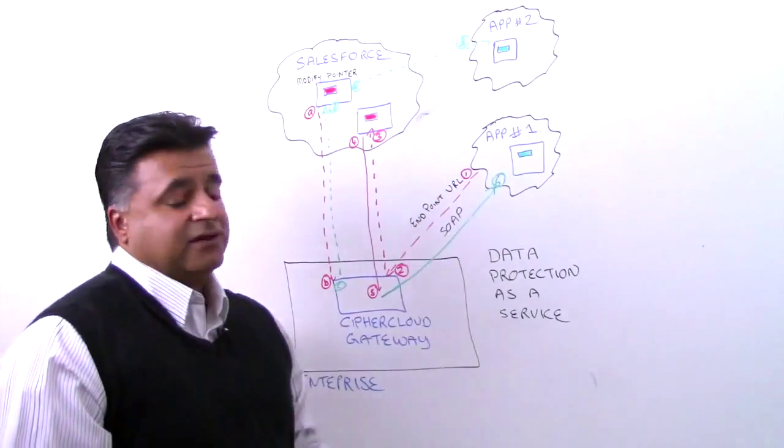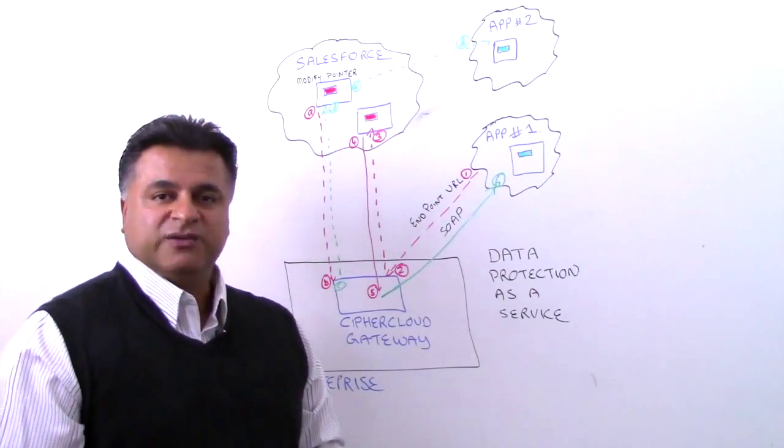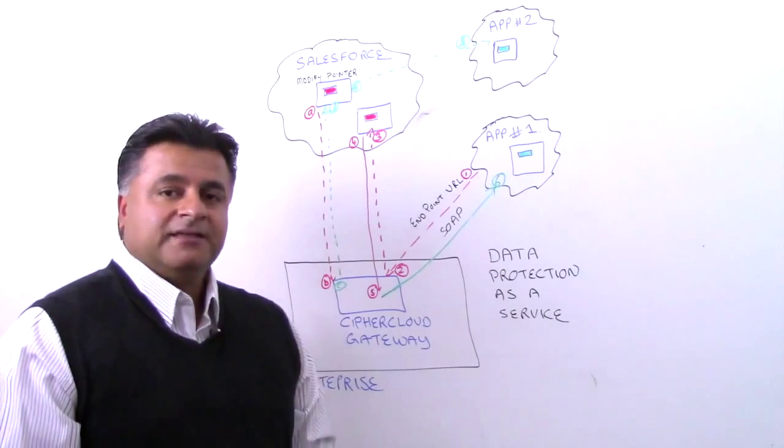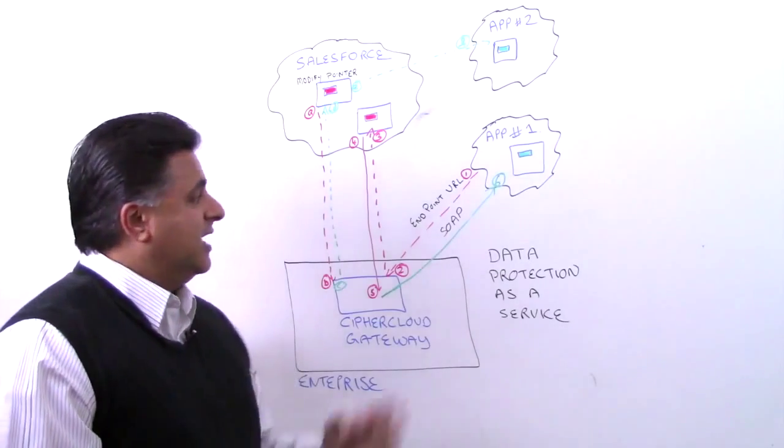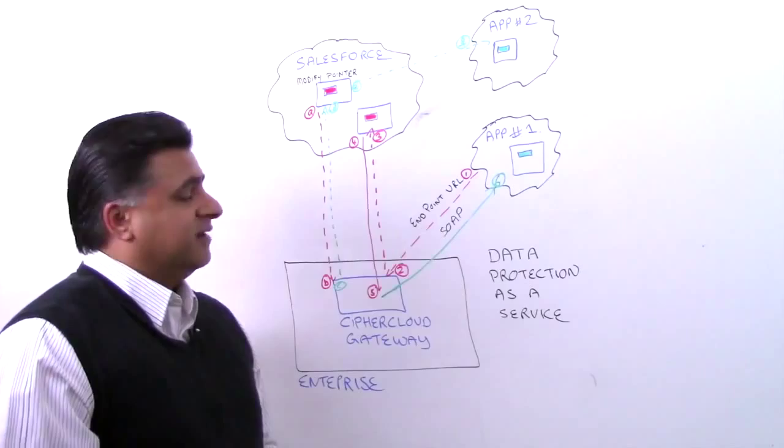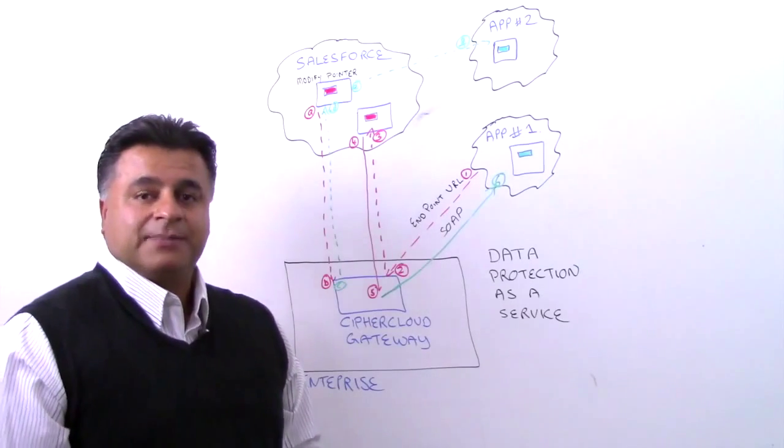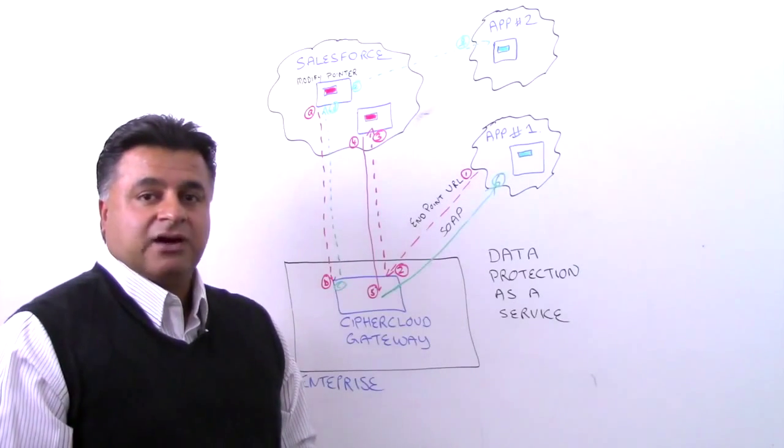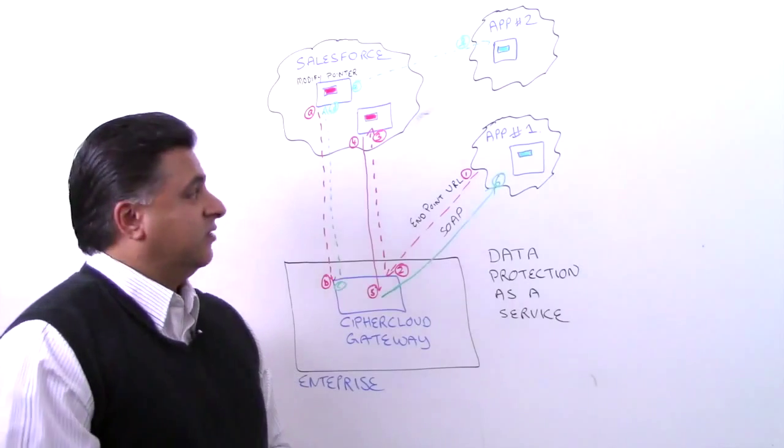Then that application in the cloud can go ahead and do its processing or whatever those next steps are. That's one example of changing the endpoint URL, and we've done that with quite a few applications that rely on Salesforce for its transactions.